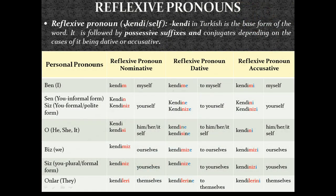The reflexive pronoun kendi translates as 'self'. Kendi in Turkish is followed by a possessive suffix. If it is in dative or accusative position, then it conjugates by taking the related dative or accusative suffixes after the possessive suffix. For the first person singular, kendi takes the possessive suffix — normally it was 'im', but since kendi itself ends with a vowel, I drop the vowel letter of the possessive suffix and just add the 'm' letter: kendim.